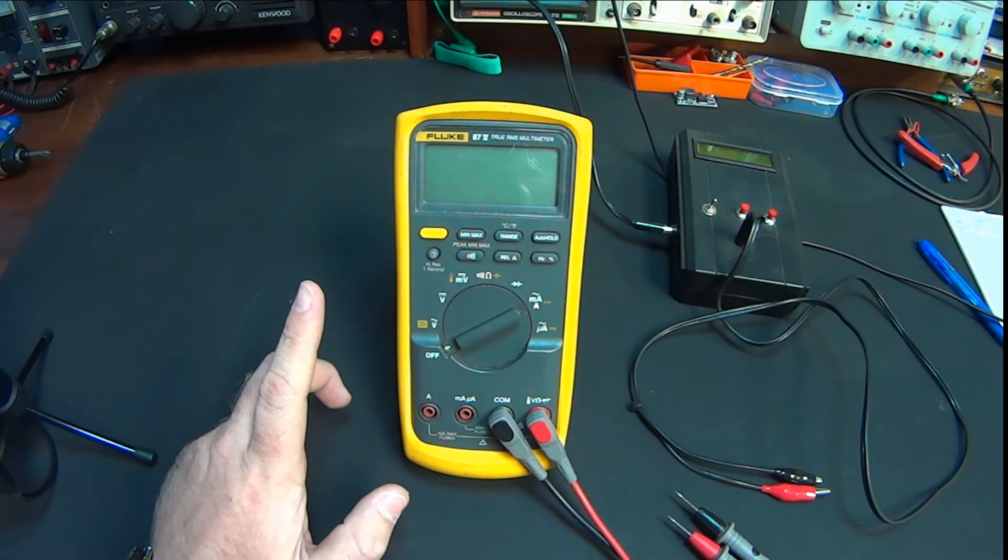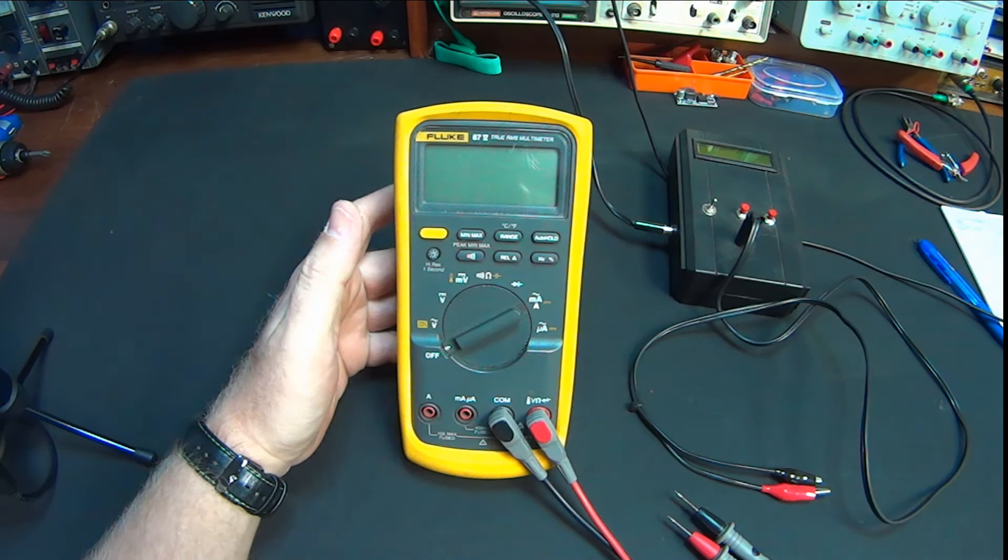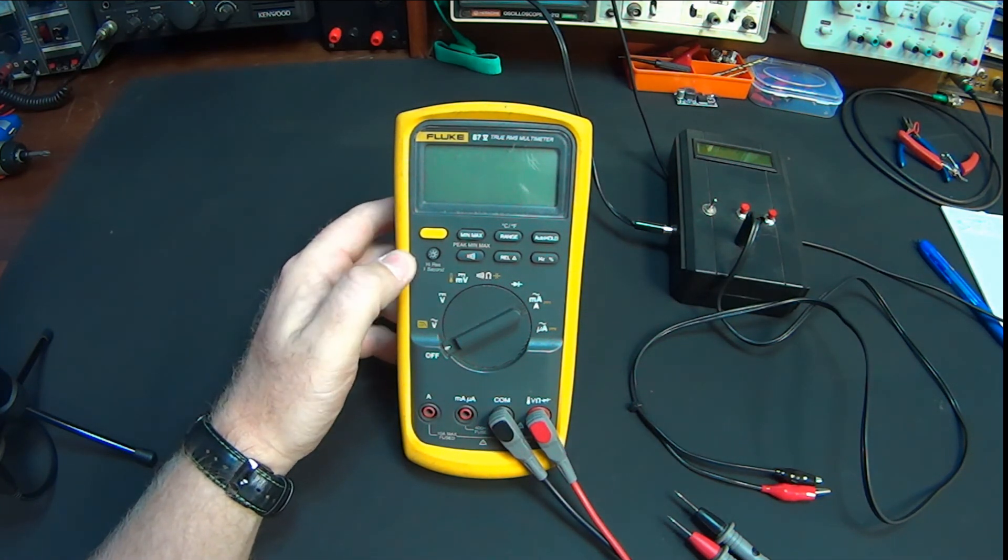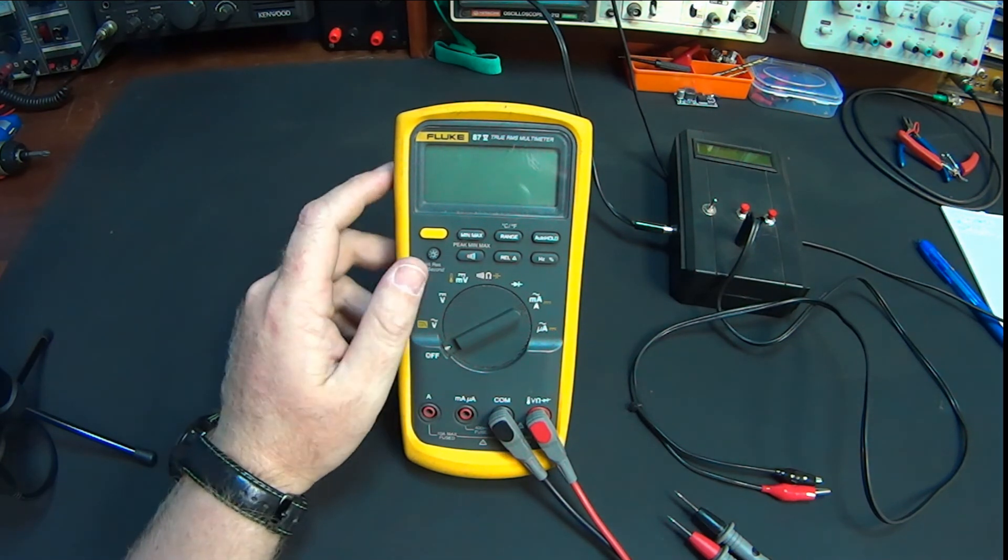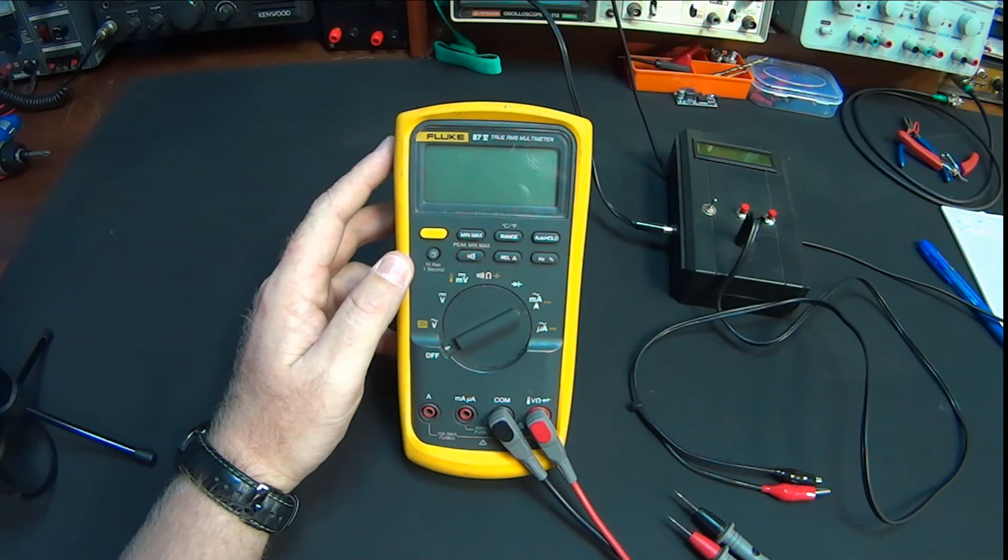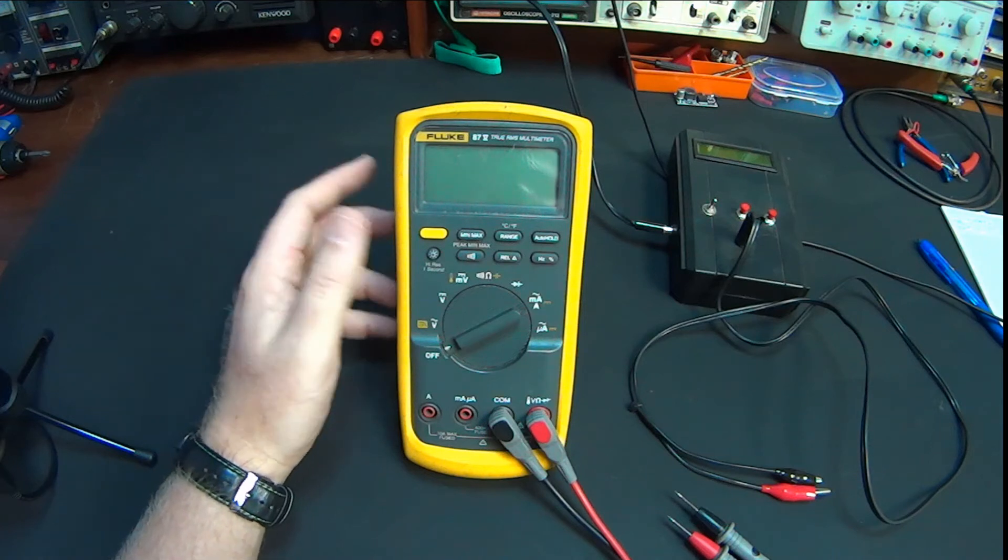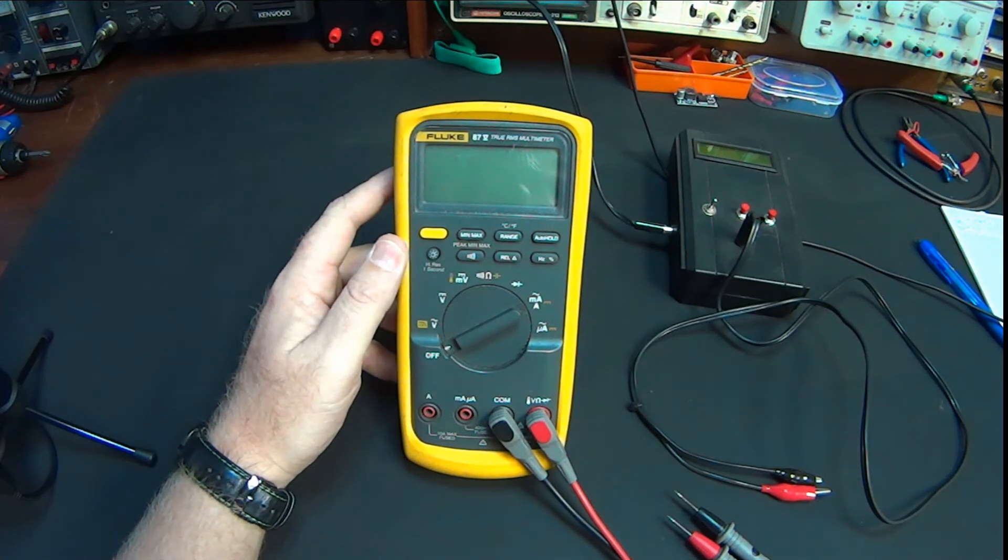So guys, a short review, a basic review of the Fluke 87-5. If you find one of these guys, pick it up. This specific meter I picked up for R900 at a local second-hand shop. Did some tests on it, everything is within spec, had it aligned, calibrated, everything is beautiful. This meter is fantastic. It needed a bit of a clean when I got it, but now that it's been cleaned up, I'm very happy with it, and really enjoying making use of it.